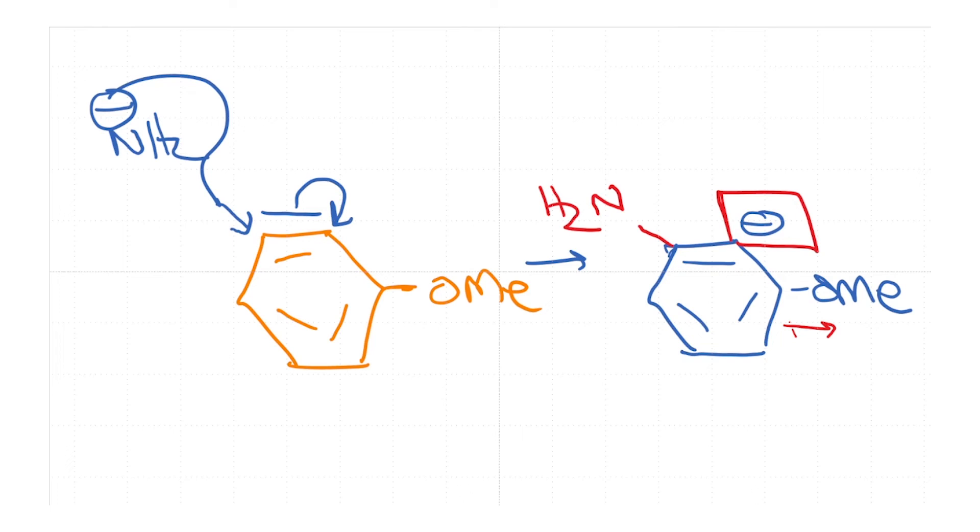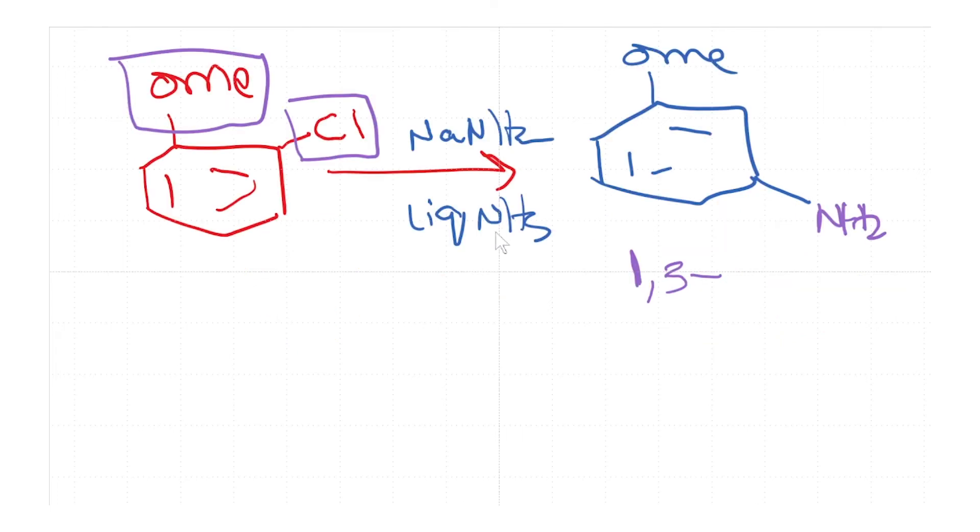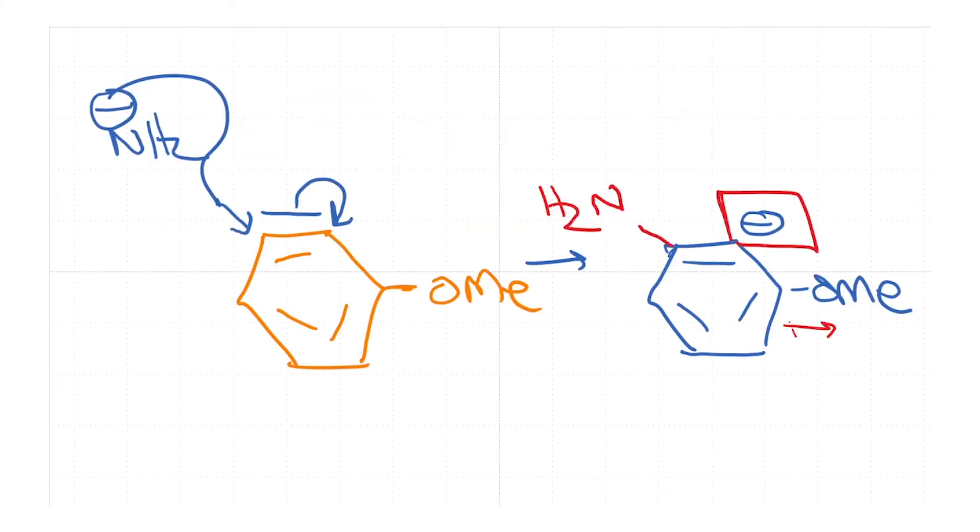So taking these two into consideration, we can help rationalize why the, or we can help rationalize the result that we got wherein the NH2 group is actually meta to the methoxy group in the product.